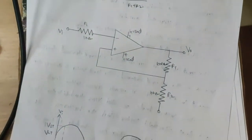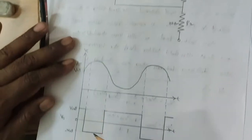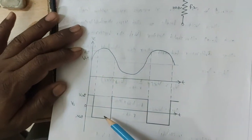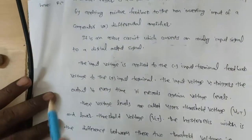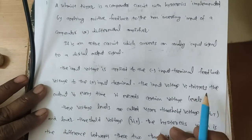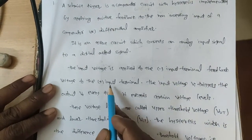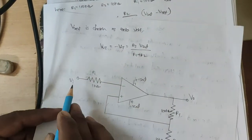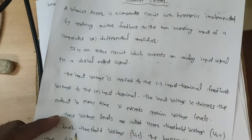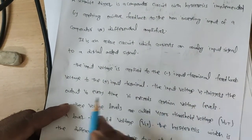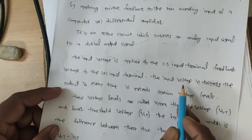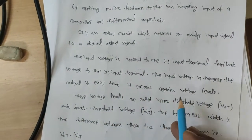The analog input signal is converted to a digital output signal. The input voltage is applied to the Inverting terminal, and the feedback voltage is applied to the Non-Inverting terminal. The input voltage Vin triggers the output voltage Vout every time it exceeds certain voltage levels. Those voltage levels are called the Upper Threshold Voltage and the Lower Threshold Voltage.